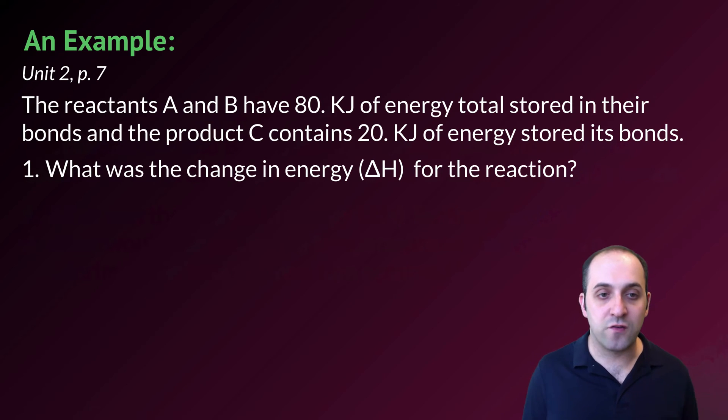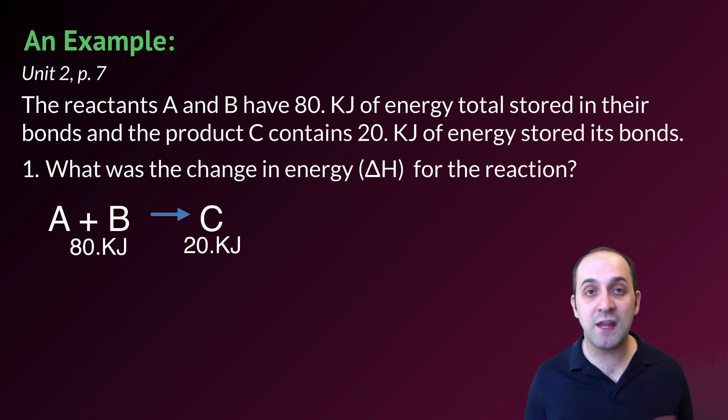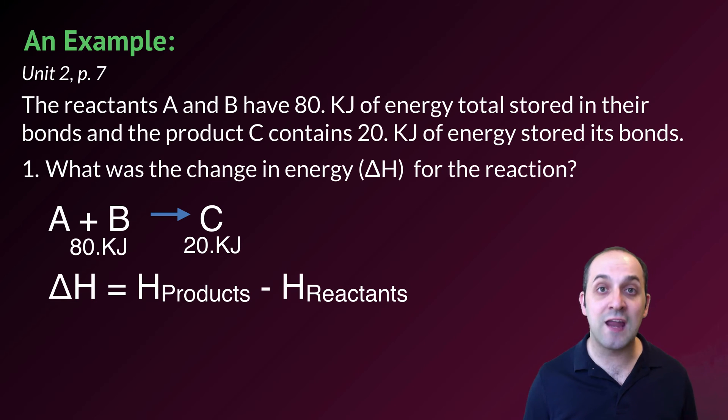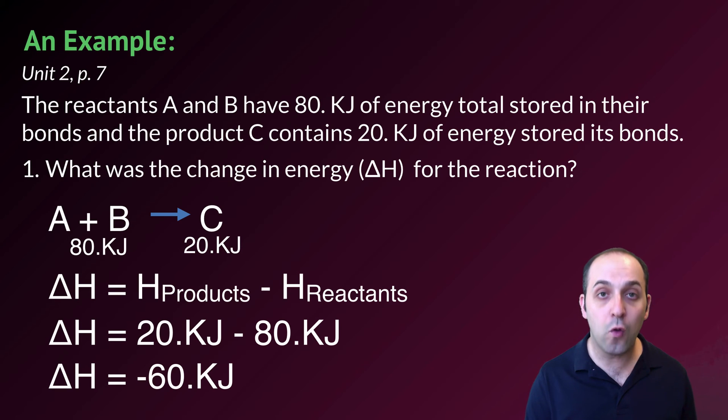Let's do part one first. What was the change in energy or the delta H for this reaction? In order to do that, let's take a look at the reaction. A plus B are yielding C. We know that A and B have 80 kilojoules of energy stored in their bonds, and we know that C has 20 kilojoules of energy stored in its bonds. In order to figure out delta H, we're just going to take the enthalpy of our products and subtract the enthalpy of our reactants from that. That's going to wind up being 20 kilojoules minus 80 kilojoules. And so when we do that, we wind up with a total of negative 60 kilojoules for our answer.